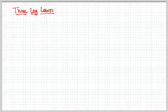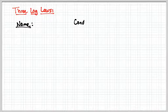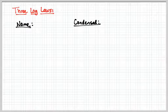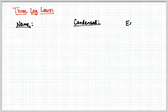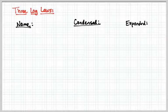We're going to kind of create a table. We're going to look at the name of the law, and you might remember these terms from Frank's class. We're going to learn how to condense, the condensed form, and then the expanded form.